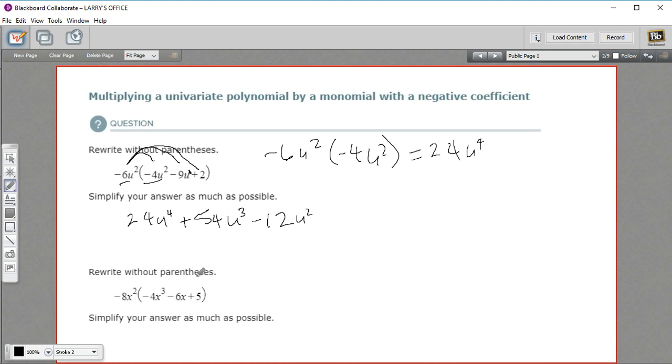Let's try one more just for practice. So again, we're going to distribute this by multiplying by each of these terms. So first, negative 8 times a negative 4. That's a positive 32. And then x squared times x to the 3rd, we add those exponents. 2 plus 3 is 5. So that's x to the 5th.